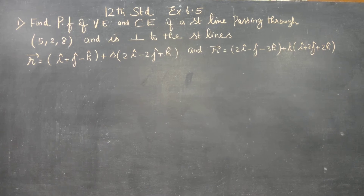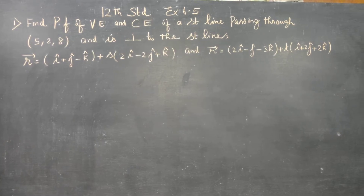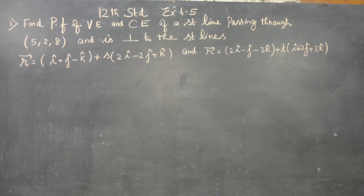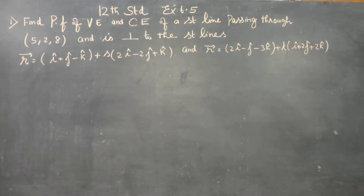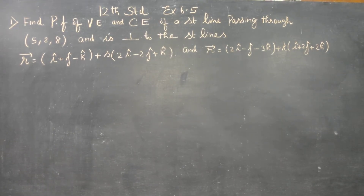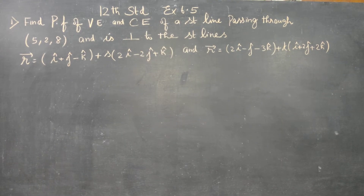Dear 12th standard students, in exercise number 6.5, find the parametric form of vector equation and Cartesian equation of a straight line passing through the point (5, 2, 8) and is perpendicular to the given lines.